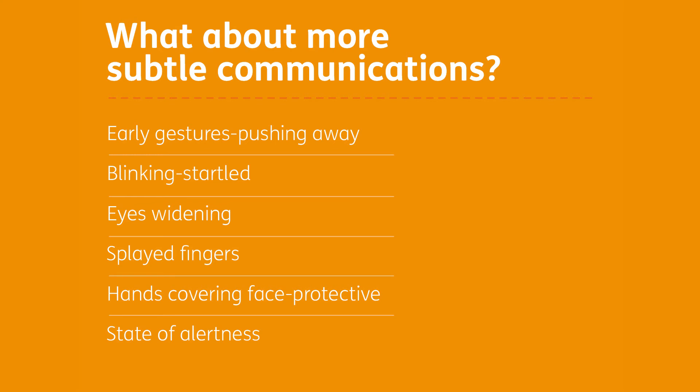A newborn child will often splay their fingers and even cover their face in a protective measure. We sometimes see this on neonatal units, particularly if someone is trying to feed a child too early when they're not ready, and we talk about cueing into that as a readiness for feeding. States of alertness — whether a child is wakeful or not — can also be a form of communication, so in the very early days a child can go into different modes of alertness and we need to interpret this as communication.